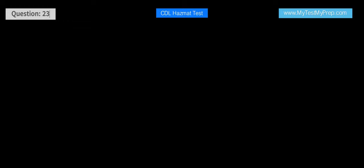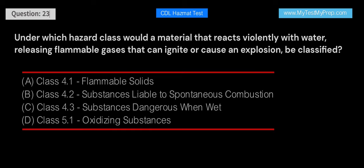Under which hazard class would a material that reacts violently with water, releasing flammable gases that can ignite or cause an explosion, be classified? A. Class 4.1 Flammable Solids. B. Class 4.2 Substances Liable to Spontaneous Combustion. C. Class 4.3 Substances Dangerous When Wet. D. Class 5.1 Oxidizing Substances. Answer: C. Such a material would be classified under Class 4.3 Substances Dangerous When Wet. This classification helps ensure the material is handled and transported with the necessary precautions to avoid contact with water.